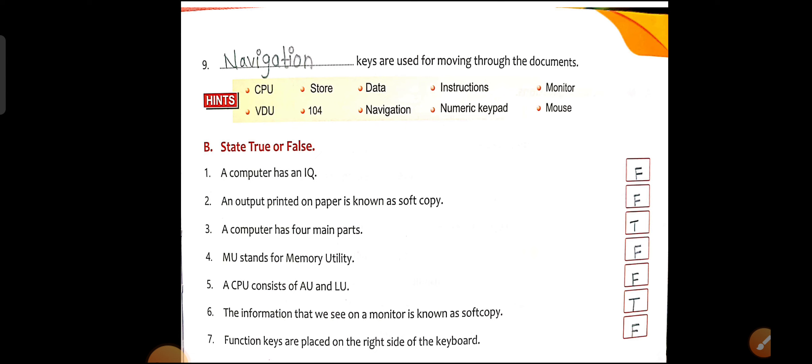Point number 4: MU stands for Memory Utility. This is False — MU stands for Memory Unit, not Memory Utility. Point number 5: A CPU consists of AU and LU. This is also False. CPU has three parts: MU (Memory Unit), ALU (Arithmetic and Logic Unit), and CU (Control Unit).